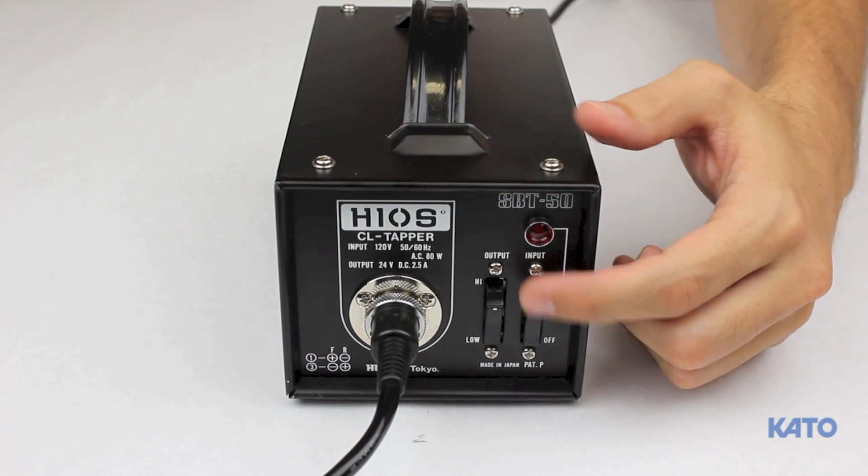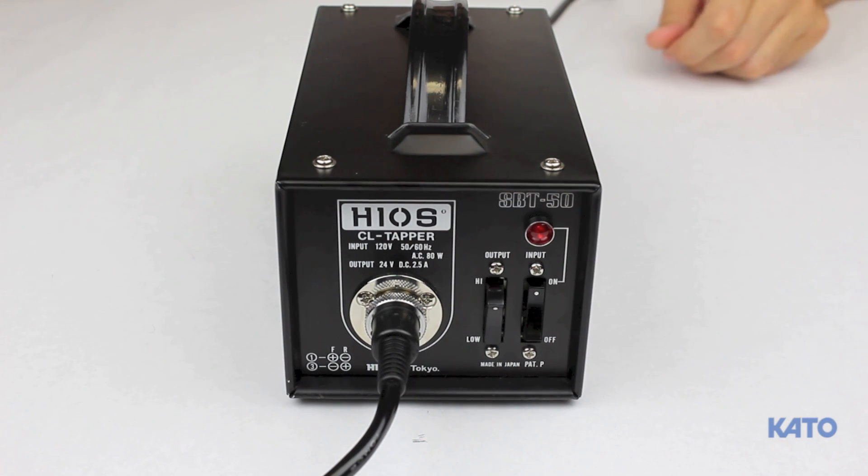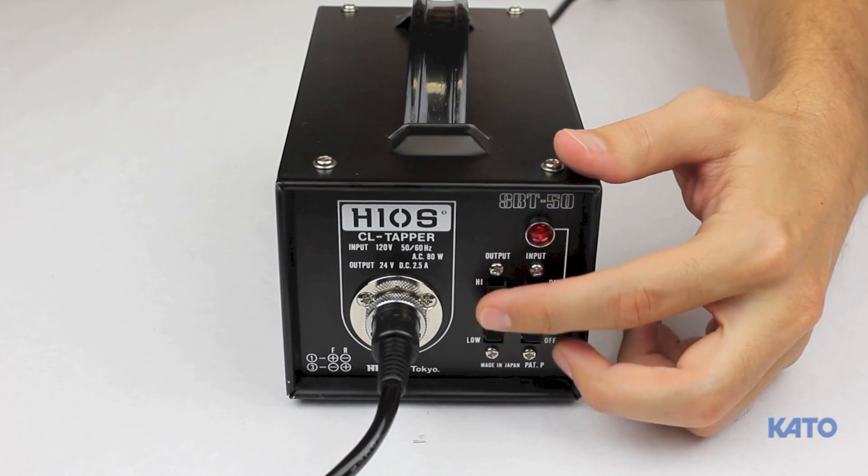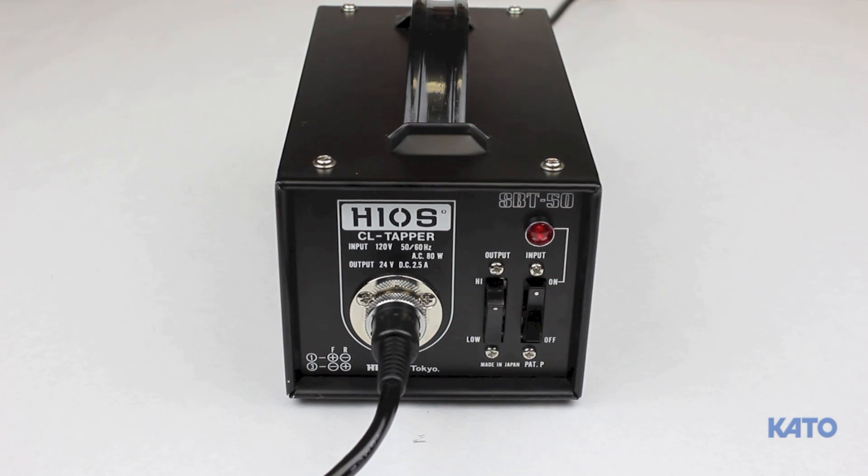To the right there is an on-off switch with a light indicator just above it. Next to that you'll find the high-low switch. Please note that for all installation of coil thread inserts, always use the low setting.